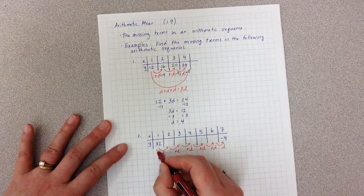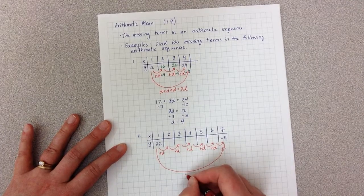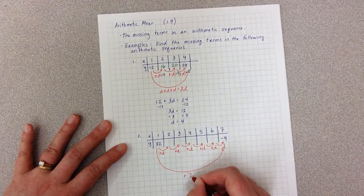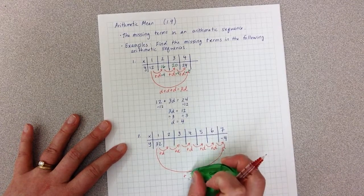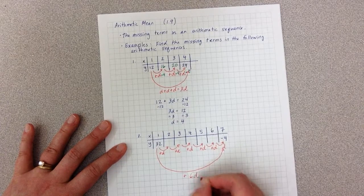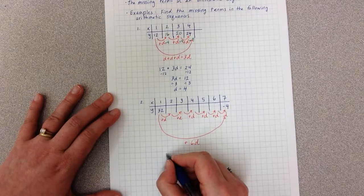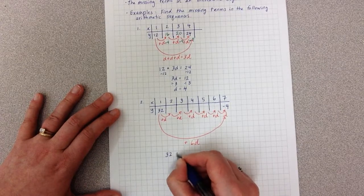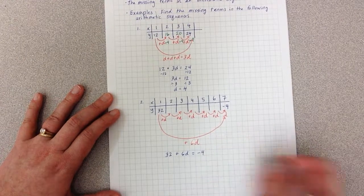If I want to go directly from my first to my 7th term, I'm adding 1, 2, 3, 4, 5, 6 D's. So I have plus 6D. I can now set up my equation: my first term plus 6D equals my 7th term.